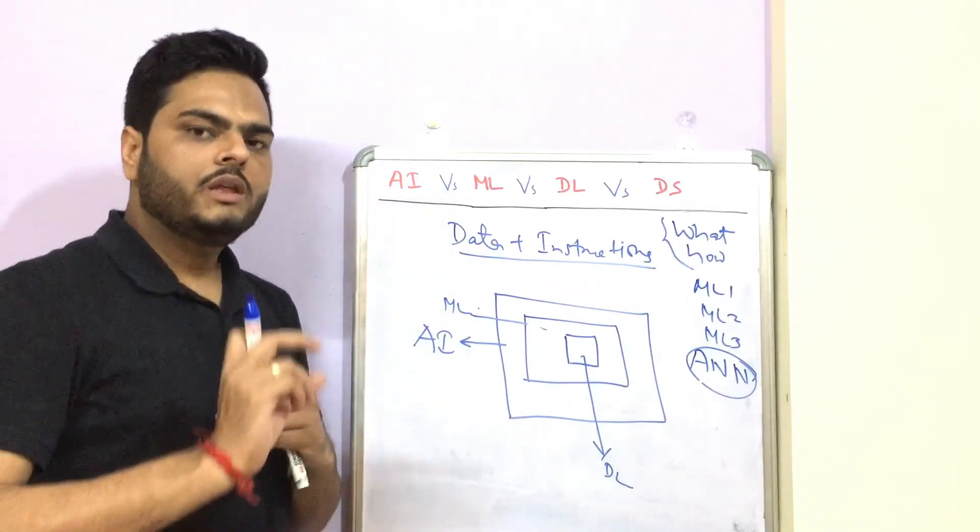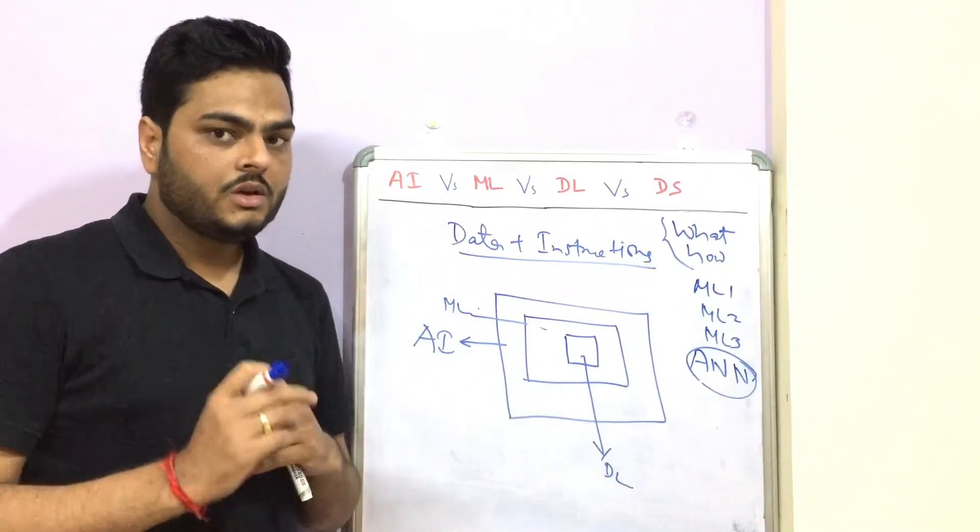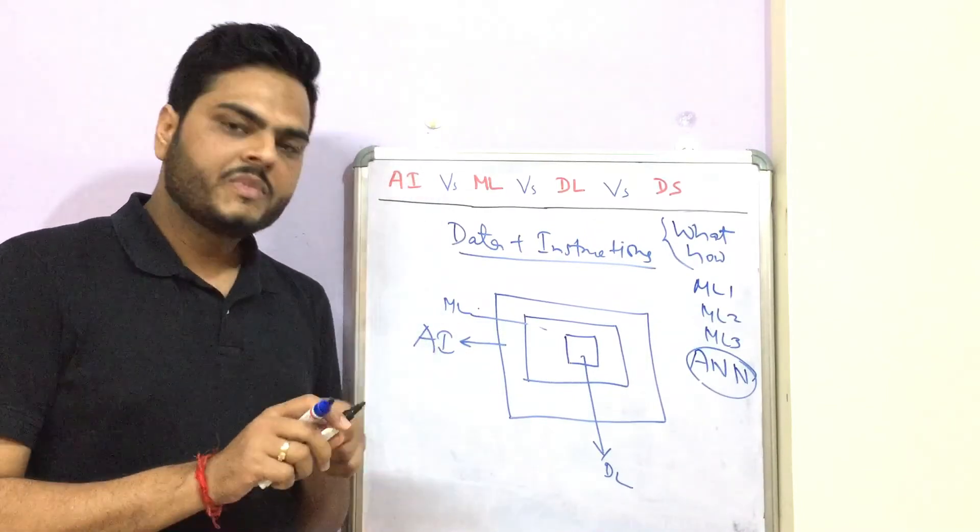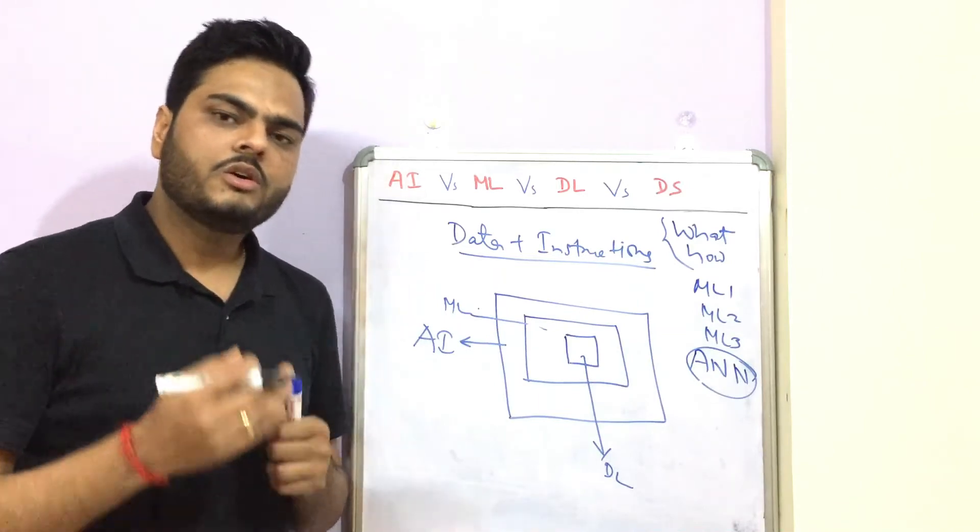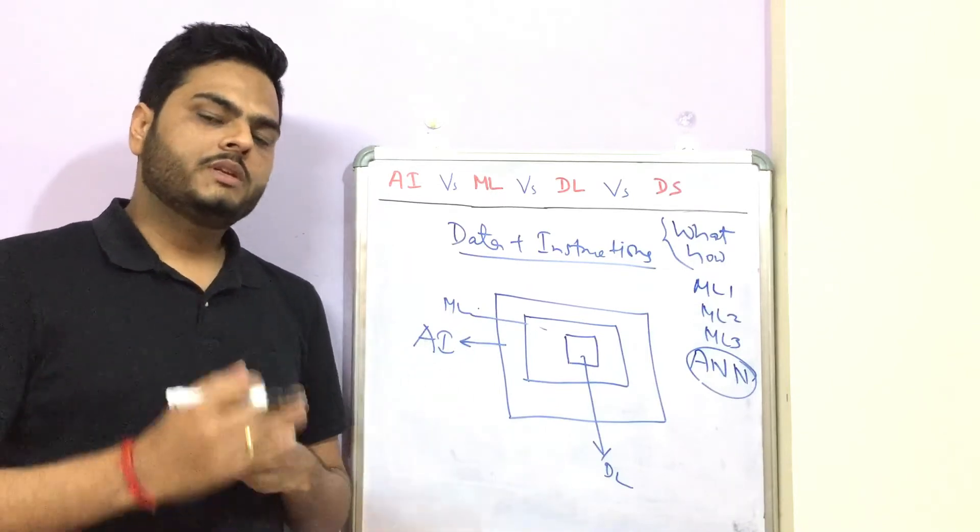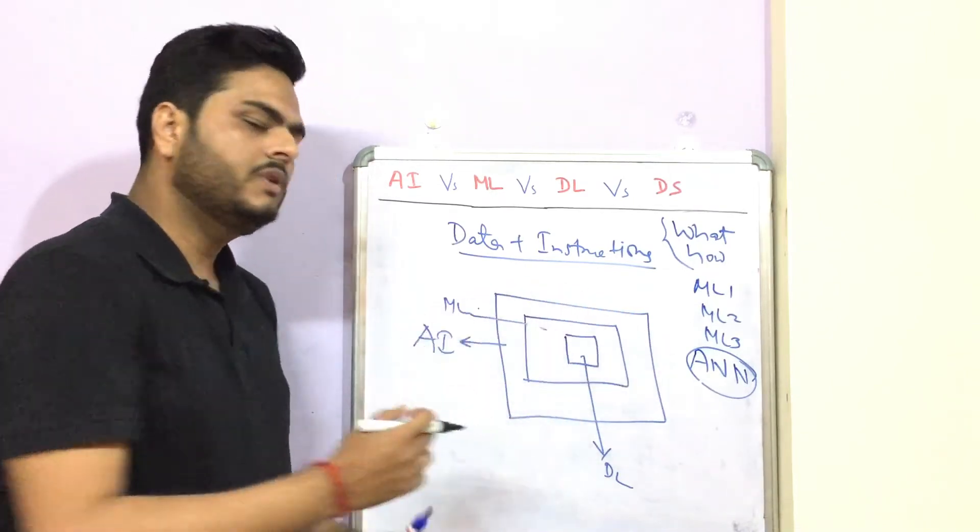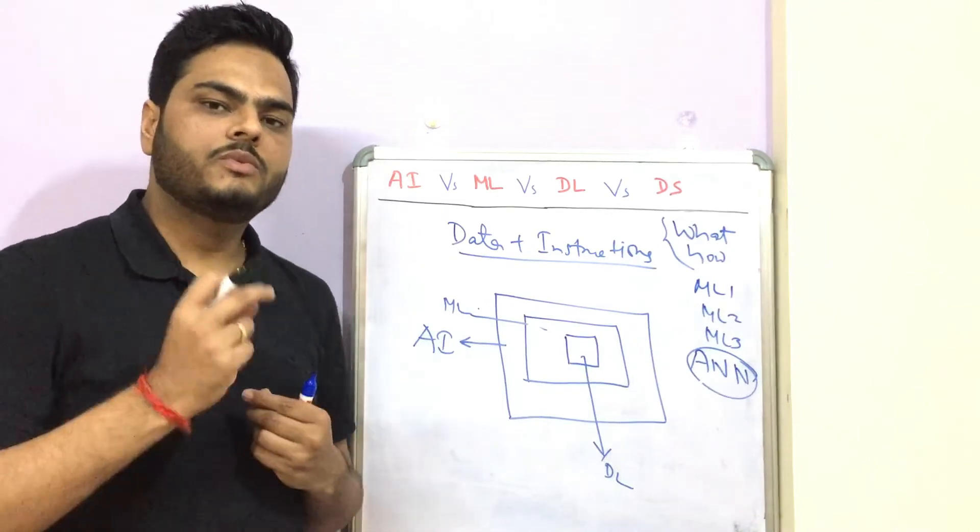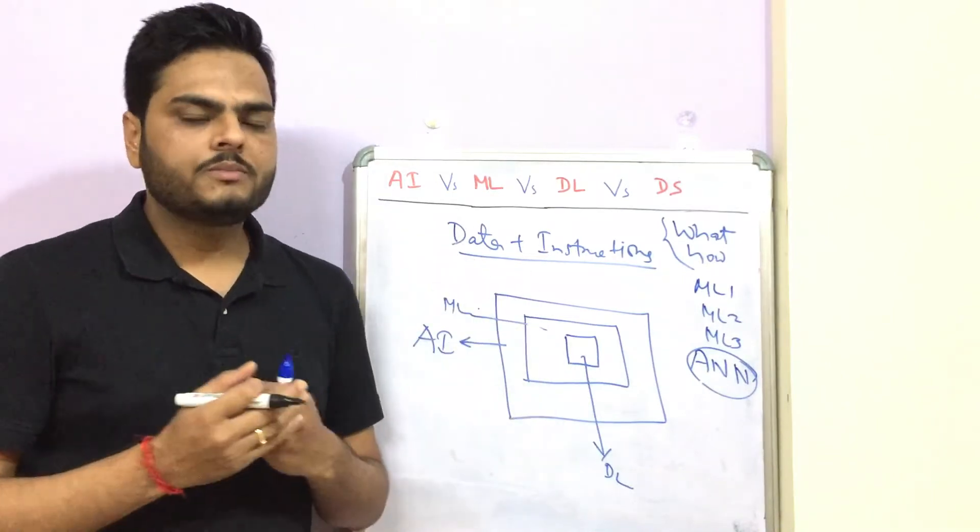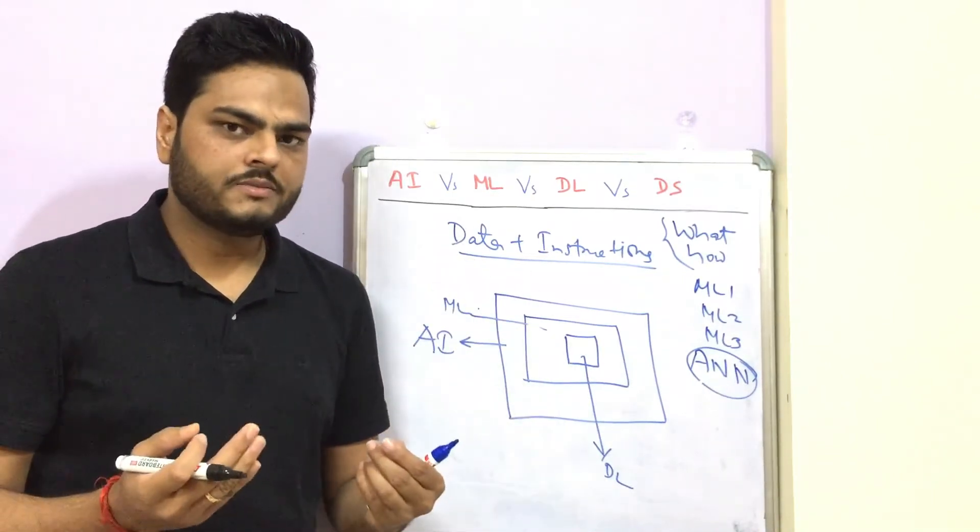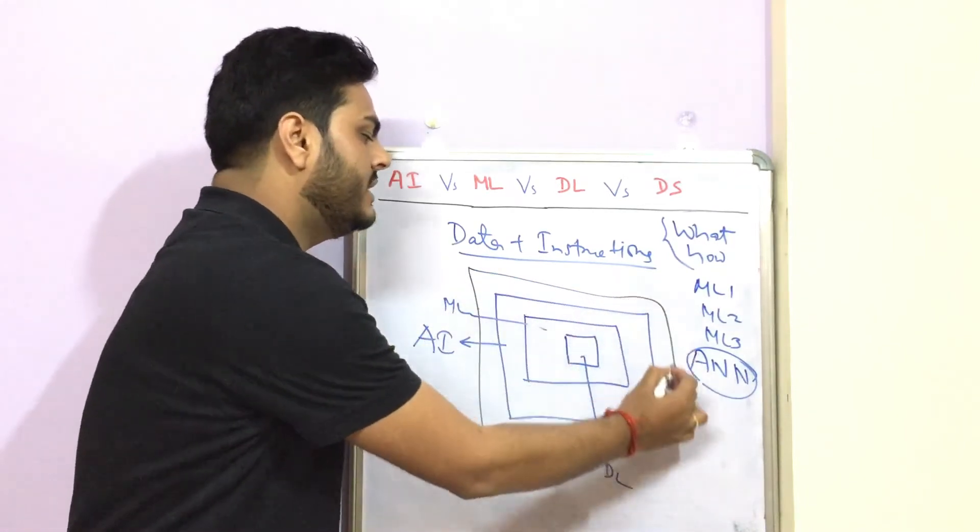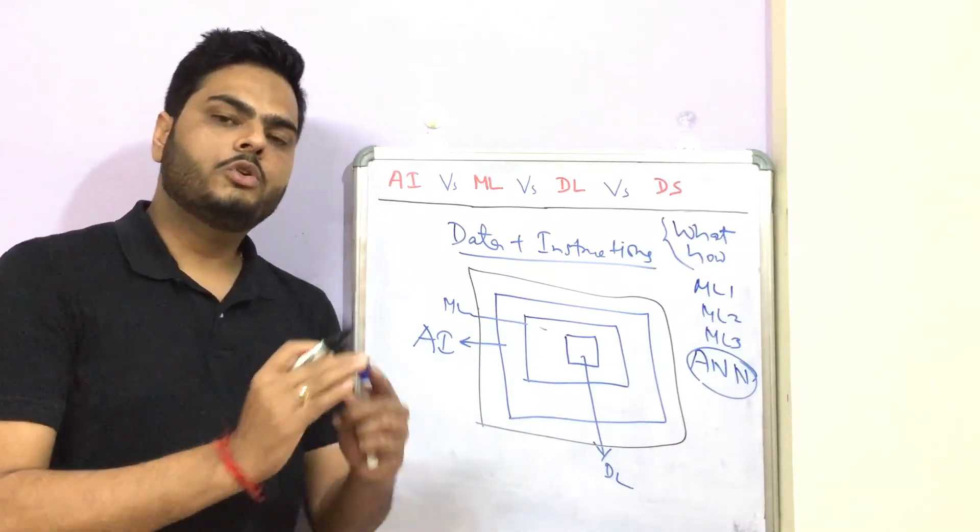But where does data science fit into all this? Well, data science is the analysis and processing of data by doing anything such that meaningful information can be derived from the data. All these things will give some meaningful insights about the data, but there are other things also apart from AI which gives some useful information from the data.